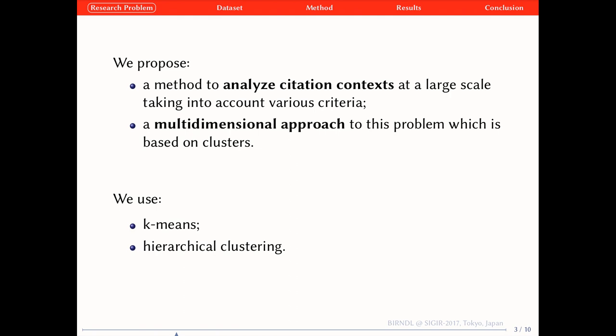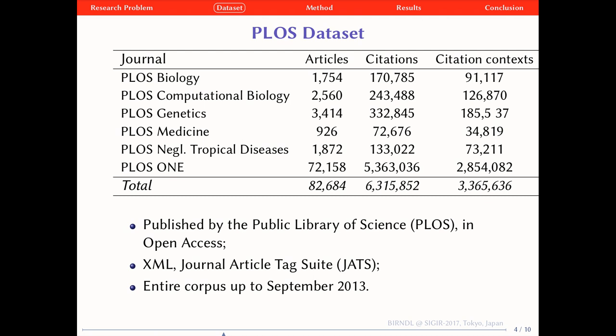In this study, we use two methods: K-means and hierarchical clustering. The dataset that we choose consists of seven journals published by PLOS in Open Access. The fact that the corpus is available in Open Access is important — it allows us to freely process the data and diffuse the results and participate in the reproducibility of science. The dataset contains around 80,000 research articles in full text in XML JATS format.